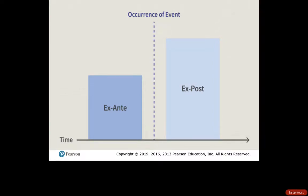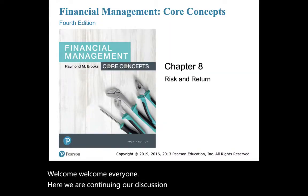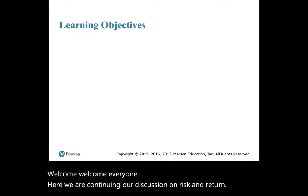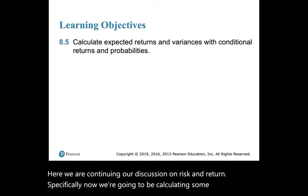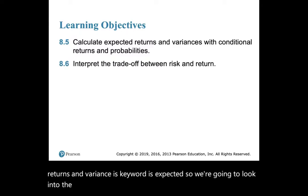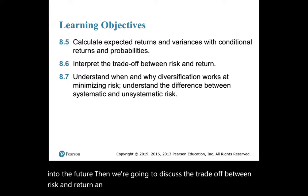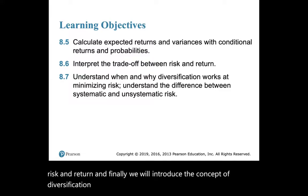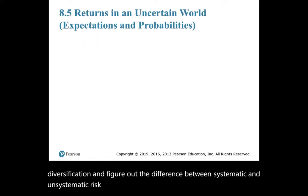Welcome everyone. We are continuing our discussion on risk and return. Specifically, we're going to be calculating some expected returns and variances — keyword is 'expected,' so we're looking into the future. Then we're going to discuss the trade-off between risk and return, and finally we will introduce the concept of diversification and figure out the difference between systematic and unsystematic risk.